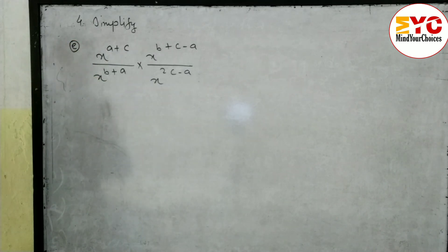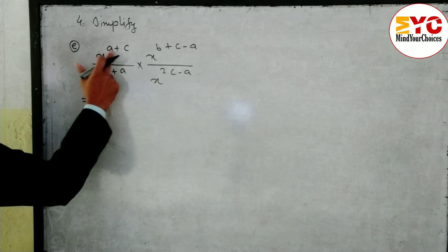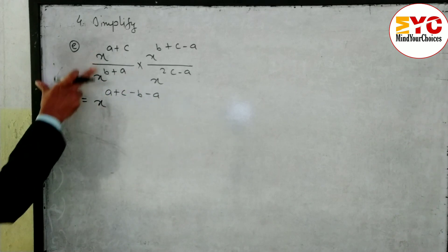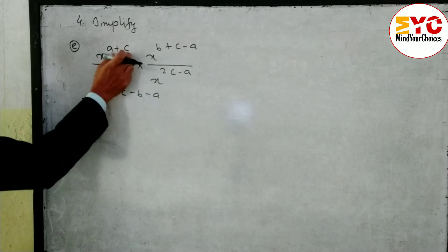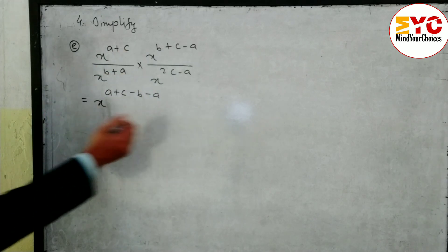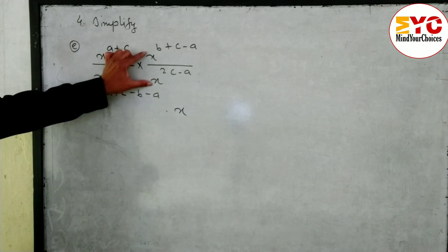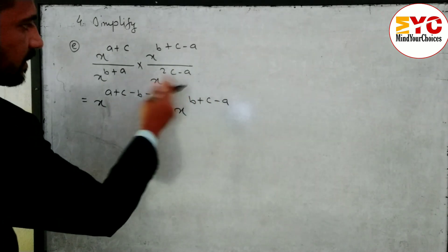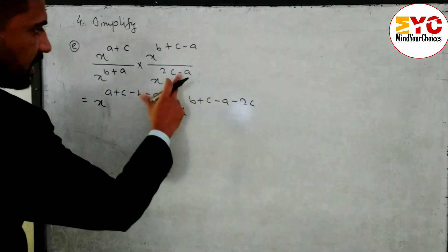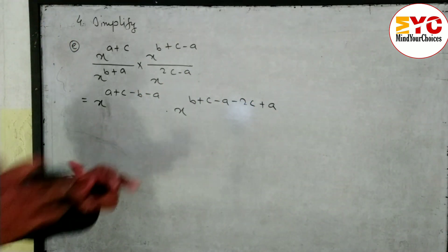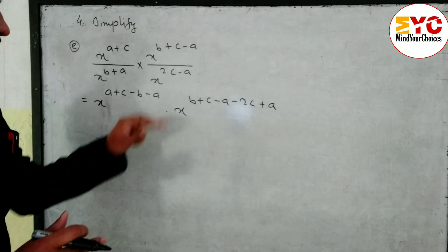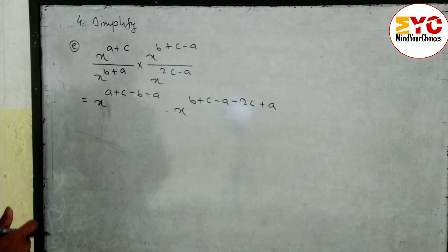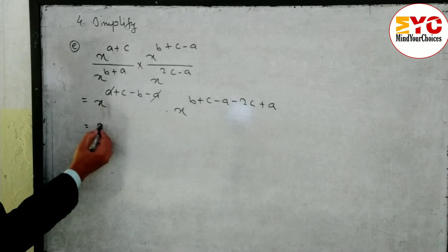In divide subtract the power. Write x power (a+c), then minus b and minus a. Second part also: base same, in divide subtract the power. Write b+c, then minus 2c — plus 2c becomes minus 2c — and minus a becomes plus a. If positive write negative; if negative write positive. Hope you understand up to here.